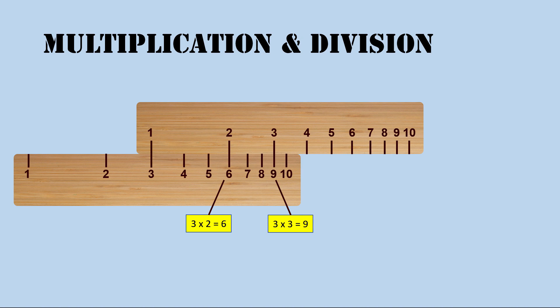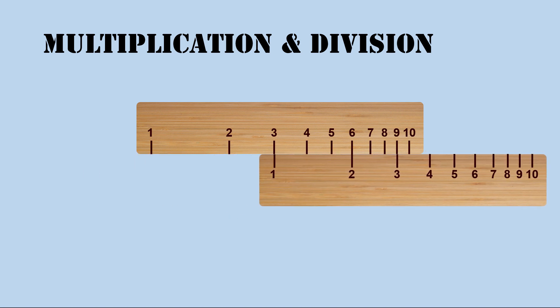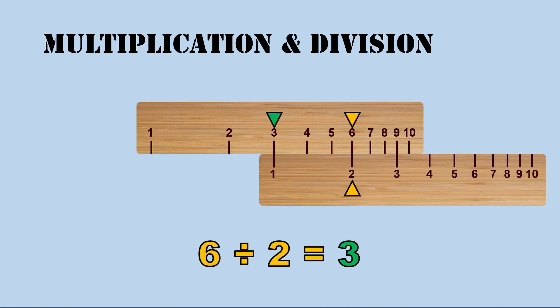We can have our 2 rulers like this or like this. We can also use this method for dividing. We can divide 6 by 2 and read off the answer 3 on the top ruler against 1 on the bottom ruler.